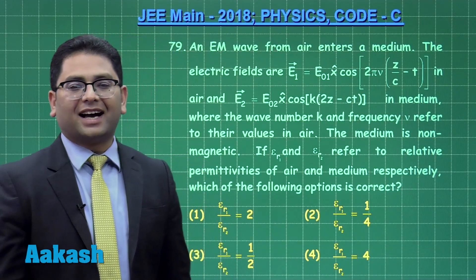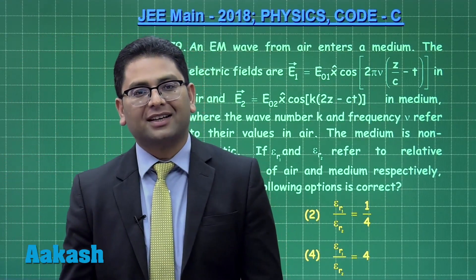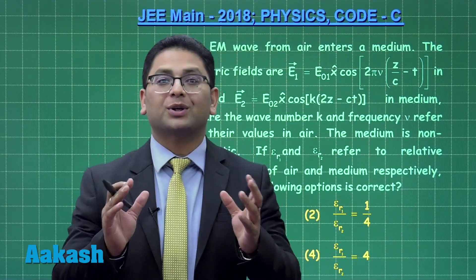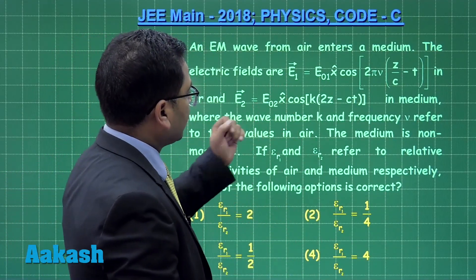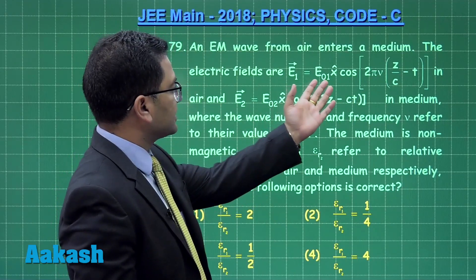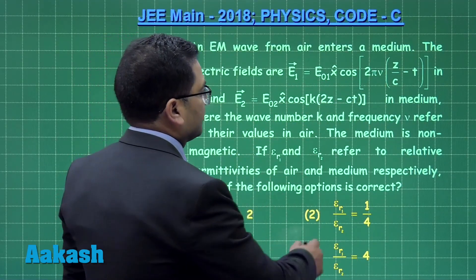Question number 79 is from electromagnetic waves, which is only in JEE Mains. There are two electric fields given: one electric field is in air and another is in medium.